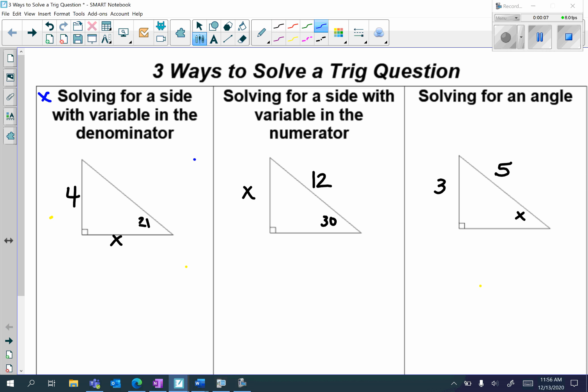Let's look at this first example of solving for a side with a variable in the denominator. So the first thing I'm going to always do is write out my acronym SOHCAHTOA. Next, let's label. So 21 is my central angle. 4 is going to be opposite, and x is next to, so it's my adjacent.